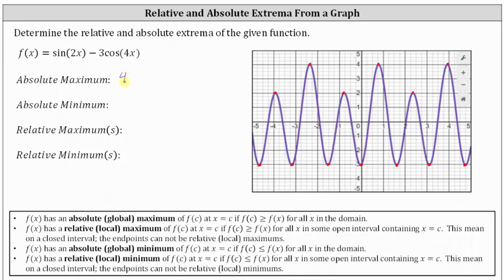Now let's take a look at the lowest points on the graph. All these points along the bottom are the lowest points on the graph, where notice how the y value or function value is negative three. Negative three is less than or equal to all of their function values, and therefore negative three is the absolute minimum.